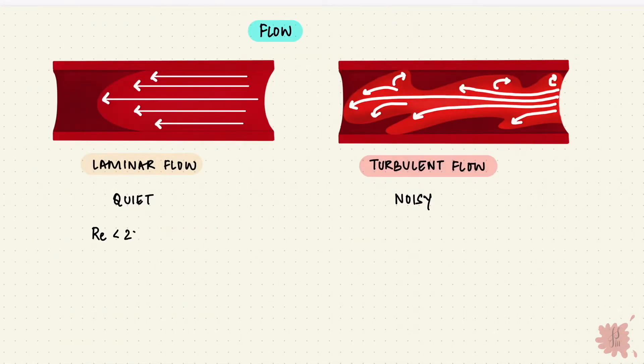When Reynolds number is under 2000, the flow is laminar. Over 2000, it becomes turbulent.